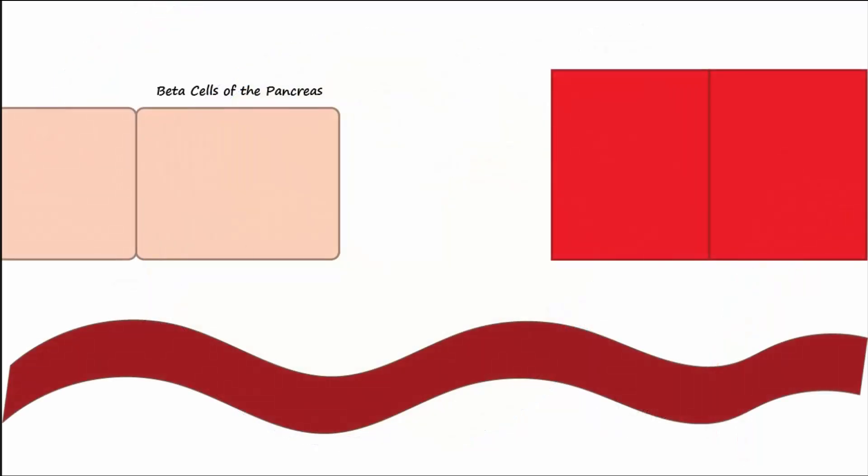To summarize, glucose enters the beta cells of the pancreas through GLUT2 channels, which brings about the release of insulin, which then enters the blood.